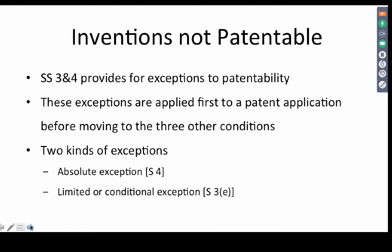The inventions that are not patentable are mentioned in sections 3 and 4 — these are the statutory exceptions. Patentability under section 2(j) refers to the positive requirements: if novelty is there, the invention is granted a patent; if inventive step is there, the invention is granted a patent; if utility is there, the invention is granted a patent.